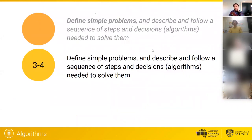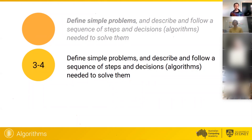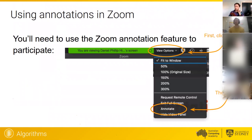Moving from Foundation to Year 2, we move to Years 3 and 4. The specification part is defining simple problems; the algorithms part is describing and following an algorithm. The key difference is that what students actually do between Foundation to Year 2 and Years 3 to 4 is pretty much the same. But students following an algorithm in Years 3 and 4, say if they get interrupted, would be expected to continue where they were and keep track of states — even though that's quite hard to describe in a curriculum content description.